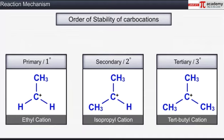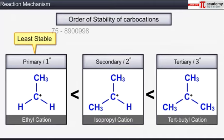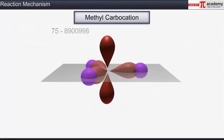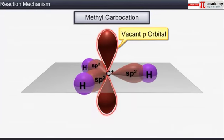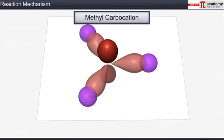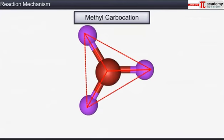Stability of carbocations increases with increase in number of alkyl groups bonded to the carbocation. Hence primary carbocations are highly unstable while tertiary carbocations are the most stable. In methyl carbocation, three sp2 hybridized carbon orbitals overlap with the 1s orbital of each of the three hydrogen atoms. The remaining 2p orbital of carbon is vacant and lies perpendicular to the molecular plane. Therefore the shape of the carbocation is trigonal planar.